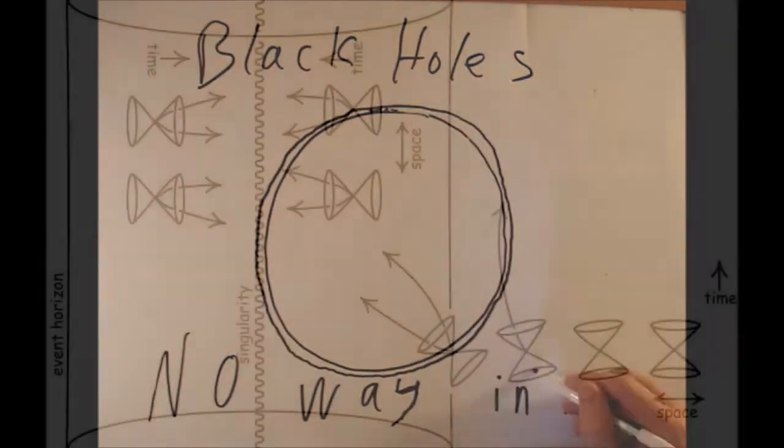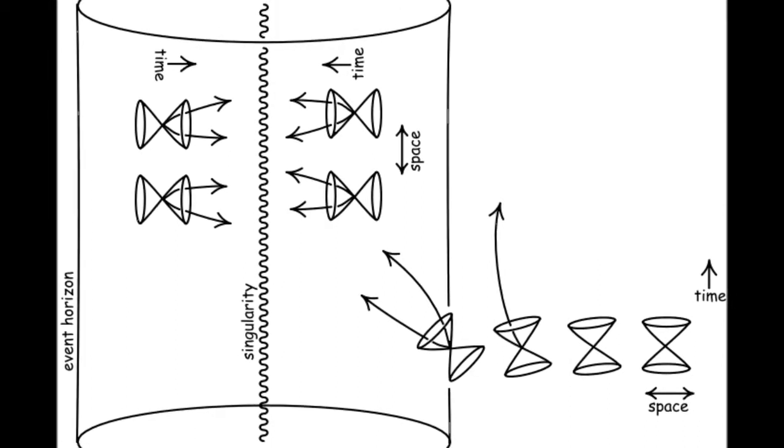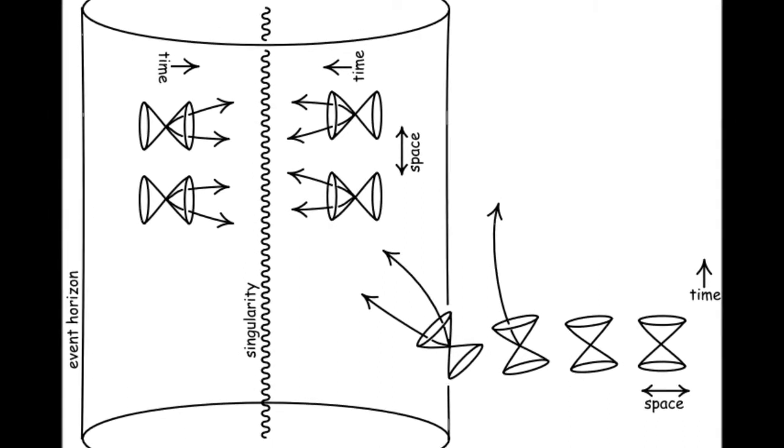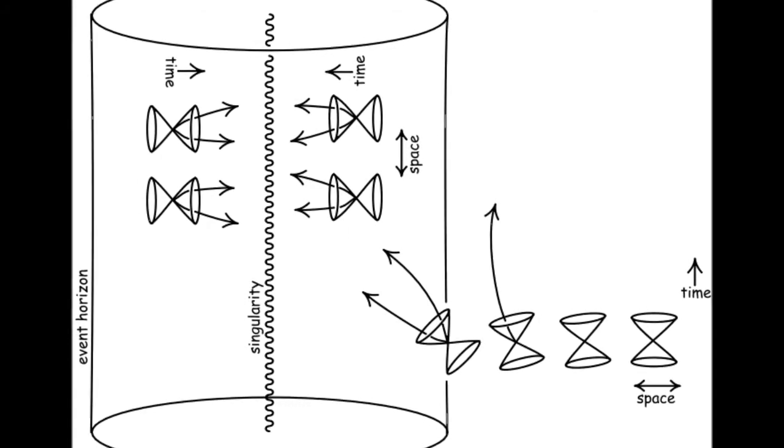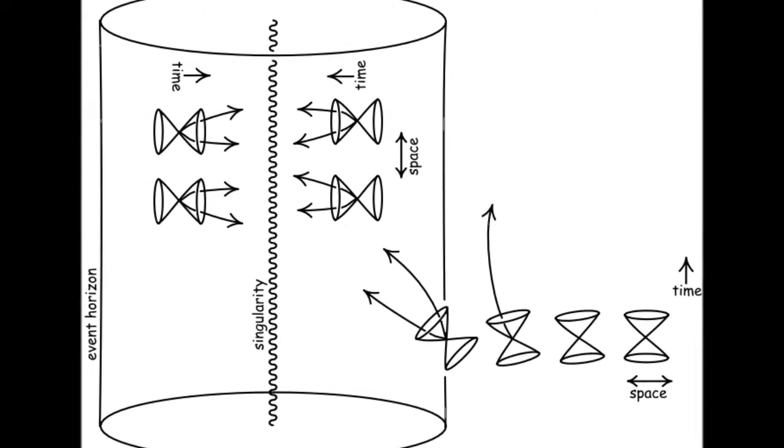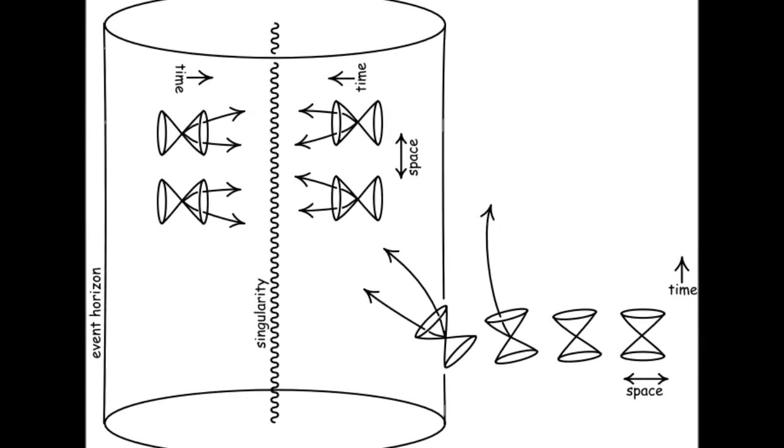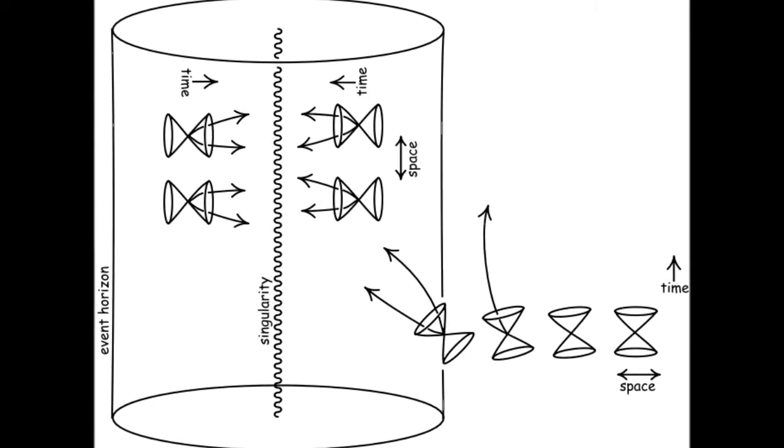Or maybe not. The black hole model I was presenting just now is the one most physicists accept today, the singular model. However, in my research, I came across a different idea. To begin with, you should know that the singular model has a problem. It's called the information paradox. There are a lot of equations to show that this is a problem, but one idea shows it best.